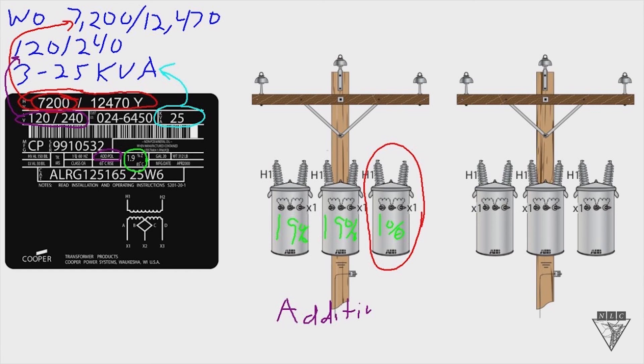If the X1 bushings are on the left hand side, then they're subtractive polarity, like this one on the far right.